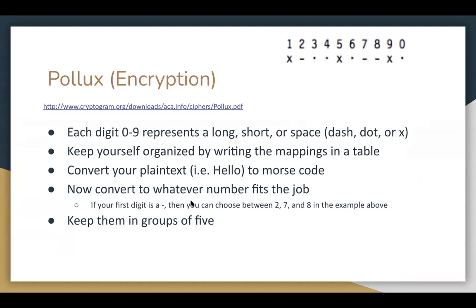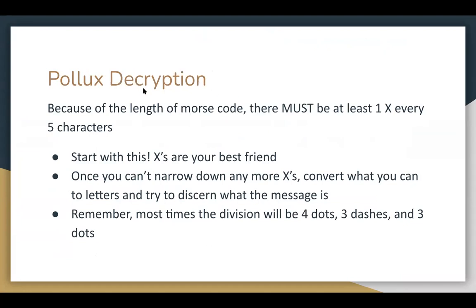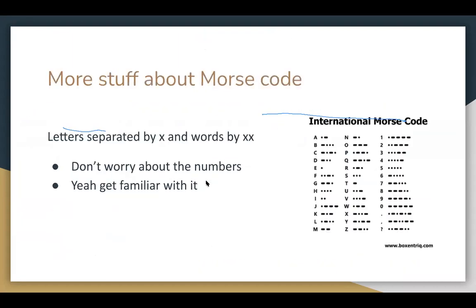A key tip: there must be at least one X every five characters. The longest any single letter can be in Morse code is four characters — for example, B is dot-dot-dot-dash and J is dot-dash-dash-dash. Since an X must separate any two different letters or an XX separates words, you can't have a letter longer than four characters. So every five characters you need at least one X. This is a very useful constraint for figuring out where the X's must go.